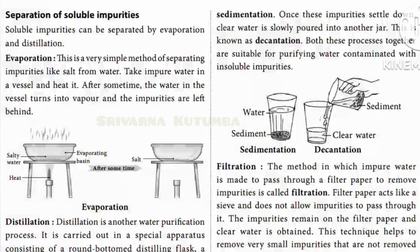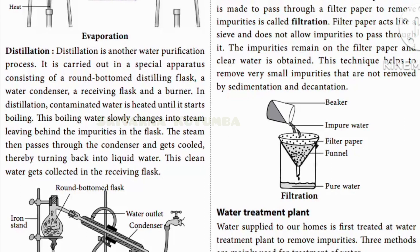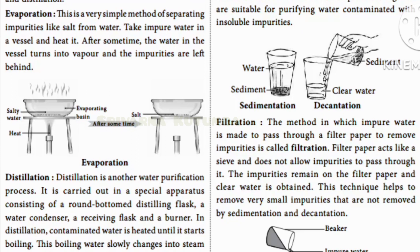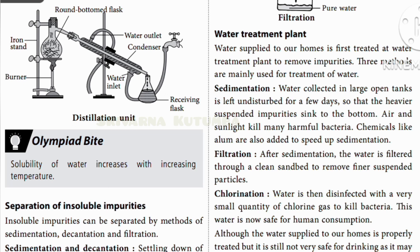To remove soluble impurities, we use evaporation. You take salty or sugary water and heat it; after some time only the salt remains. Next is distillation — it is similar to evaporation, but in evaporation only the impurity is left behind and you cannot access the water. In distillation, you heat the water and the water vapor goes into a condenser, then slowly flows into a container as pure water.